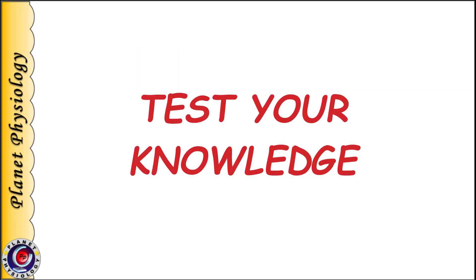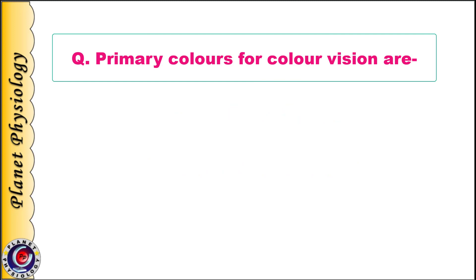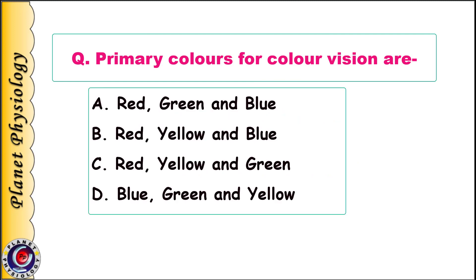As we have completed the topic, let us test our knowledge by solving some questions. Primary colors for color vision are: A. Red, Green and Blue; B. Red, Yellow and Blue; C. Red, Yellow and Green; D. Blue, Green and Yellow.